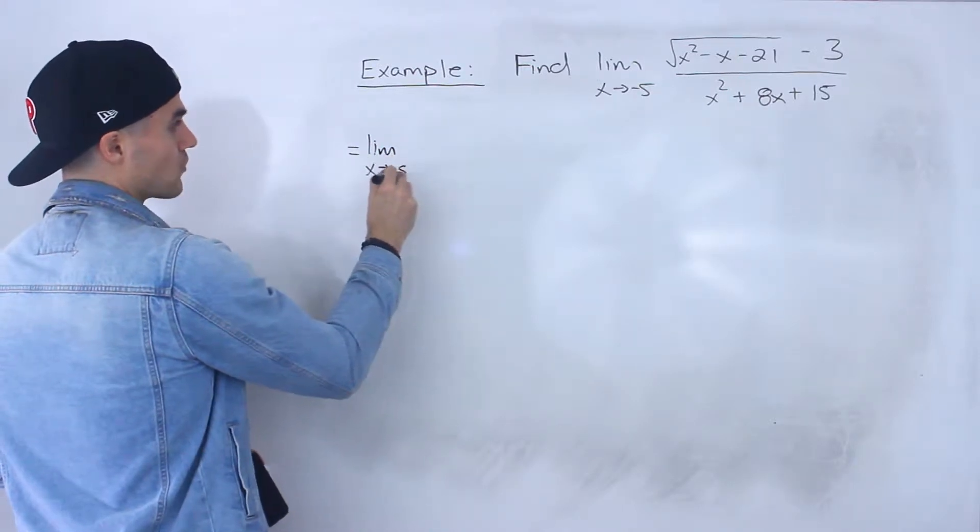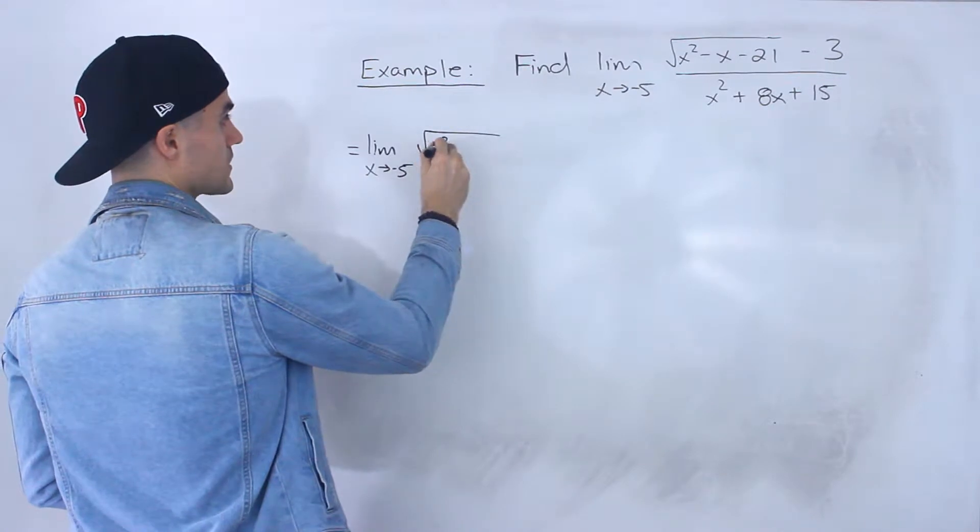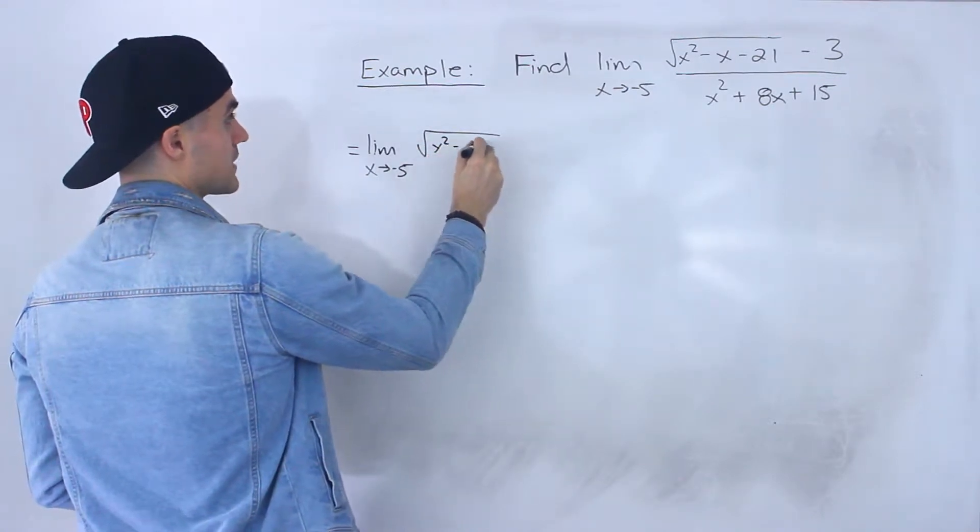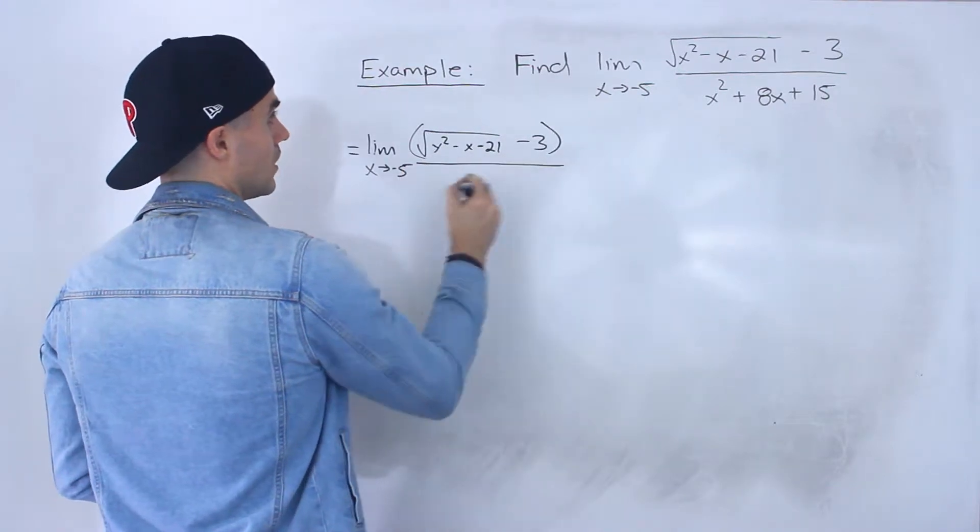So what we have to do is we first have to rationalize that numerator. We've got x squared minus x minus 21 minus 3. I'm going to put this in brackets all over x squared plus 8x plus 15.